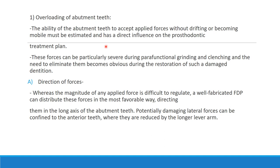Overloading of the abutment teeth will cause drifting and many issues, particularly in parafunctional clenching habits — it will probably damage the dentition. Coming to direction of forces: whereas the magnitude of any applied force is difficult to regulate, a well-fabricated dental prosthesis distributes the forces equally. Potentially damaging lateral forces can be confined to the anterior teeth where they are reduced by longer lever arms.